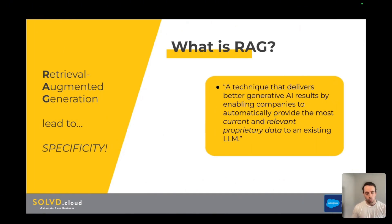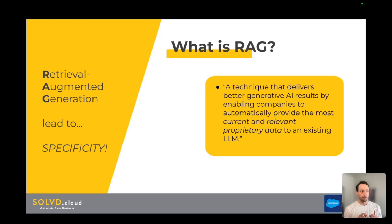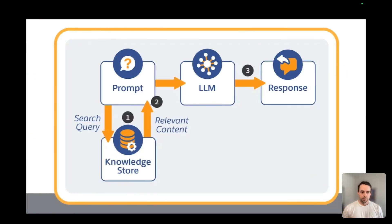The way that it integrates with Agentforce is through RAG, or retrieval augmented generation. RAG is essentially — instead of just inputting a prompt into an LLM and the output being fortified only by the training data the model was trained with — it augments the generated output with your company's relevant, current, and proprietary data. This allows you to get specific outputs, which is key.